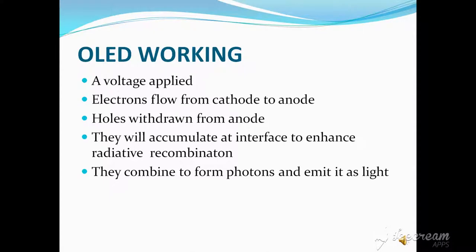Regarding OLED working: when a voltage is applied, electrons flow from cathode to anode. Holes are also withdrawn from the anode. They accumulate at the interface to enhance radiative recombination, then they combine to form photons and emit light.